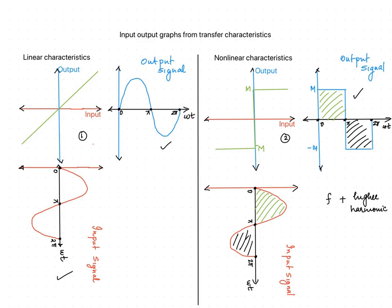Let us start with the characteristics of a linear element. A sine wave is given as the input. Since the characteristics is a linear one, the output will also be a sine wave. That means the wave shape is maintained with the same frequency.